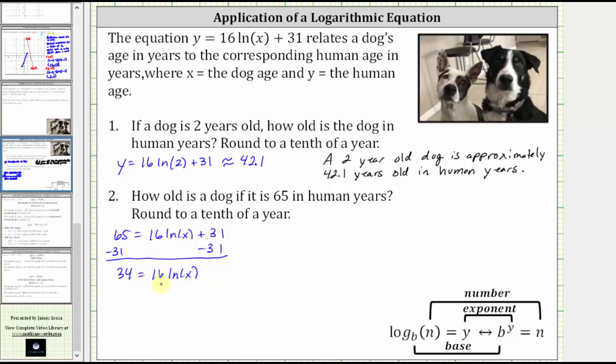The next step is to divide both sides by 16. Simplifying on the right, 16 divided by 16 simplifies to one, giving us natural log x is equal to 34 sixteenths.